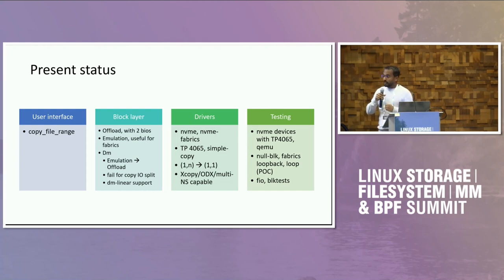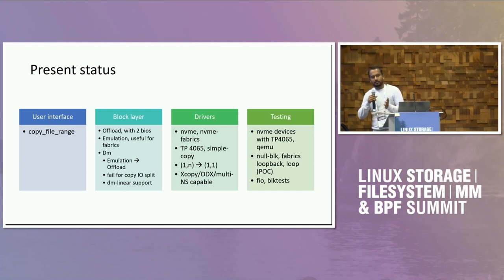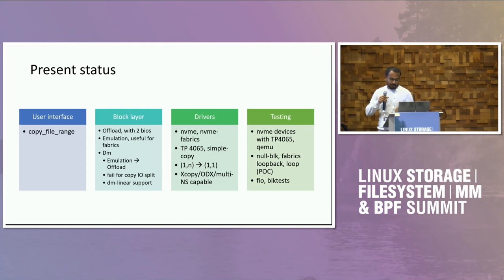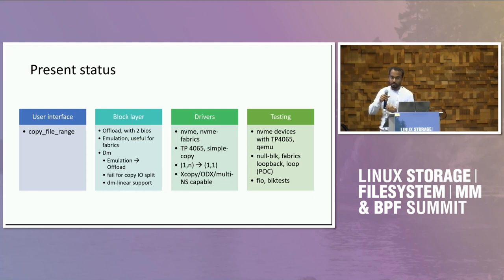The current block layer architecture is capable of supporting xcopy, ODX, and if NVMe copy across namespaces comes in, that should also be addressable with the present infrastructure. For testing, QEMU support was there earlier as well, and now we also have null block and Fabrics loopback.